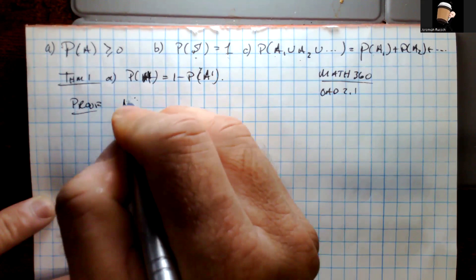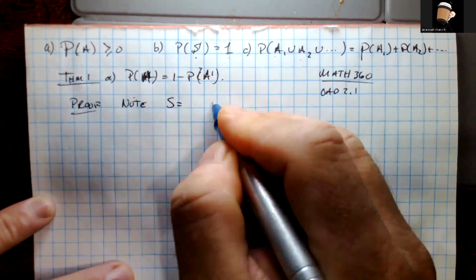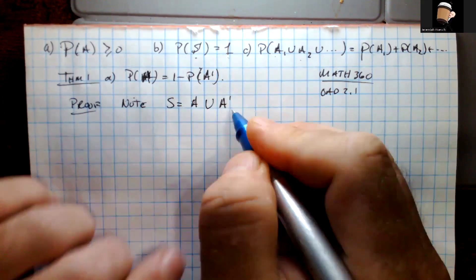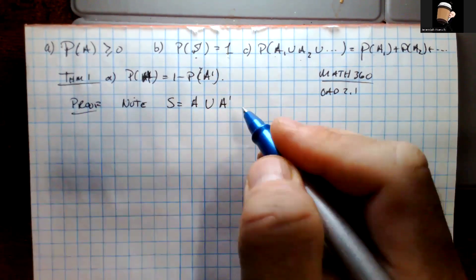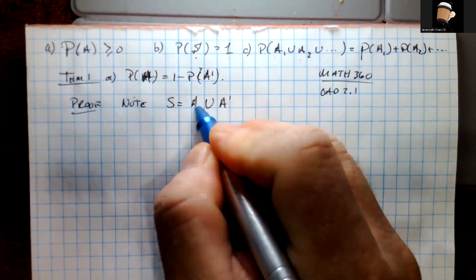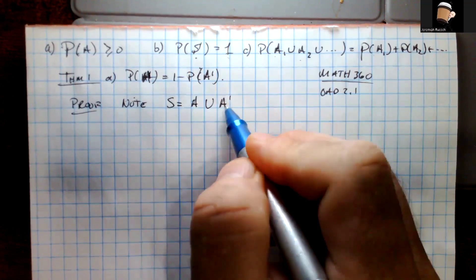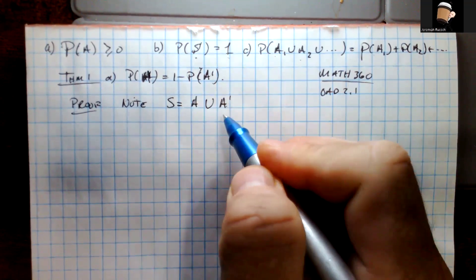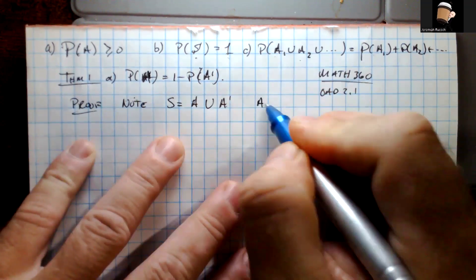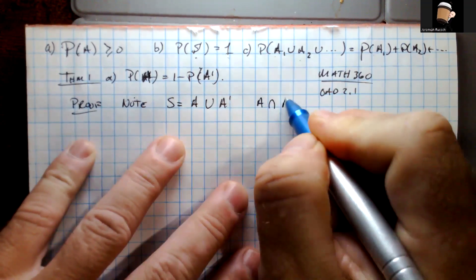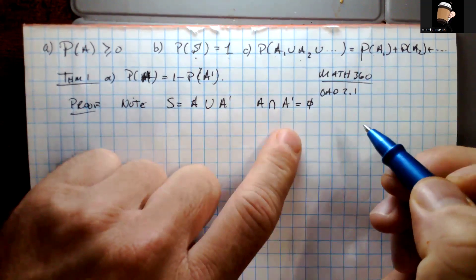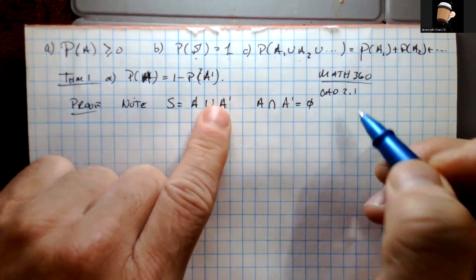First, we note that the set S can be written as the union of A and its complement, since A and its complement are by definition disjoint. The union of those two things will be the entire set S, because A is a subset of S and A-complement is everything outside of A. By definition, A intersected with A-complement equals the empty set.